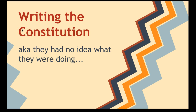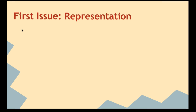During the writing of the Constitution, they really had no idea what they were doing. No one had really done this before, and so they just decided to focus on major issues. The first one that they tried to tackle was representation, because that was their main complaint for the Revolution and independence, and so they wanted to make sure that that was very clear in the Constitution.